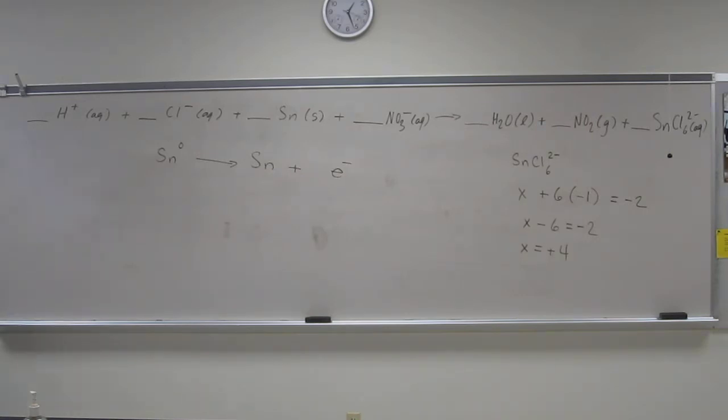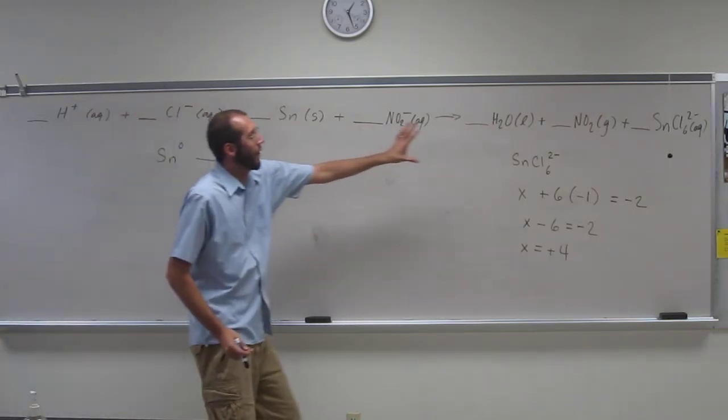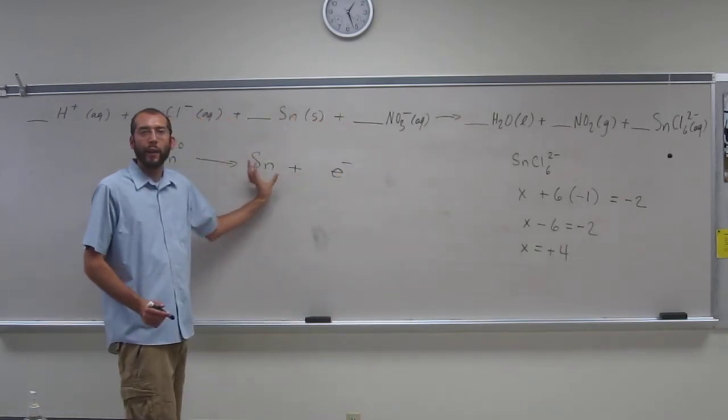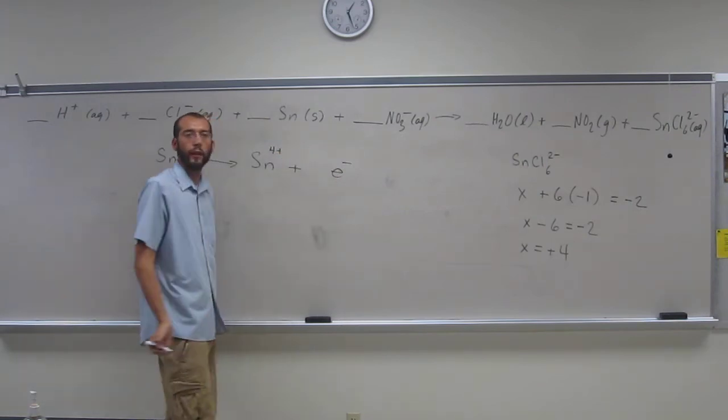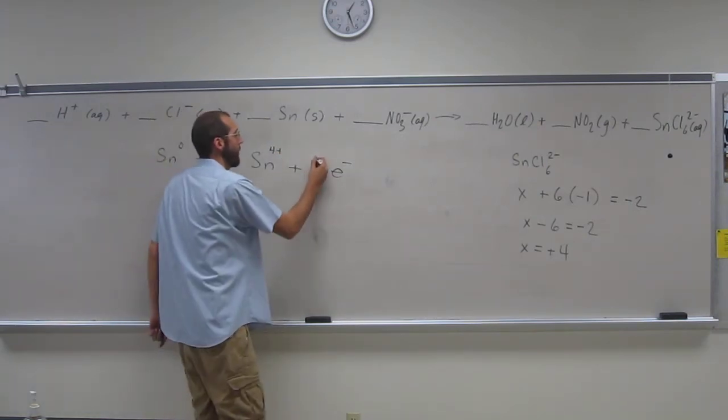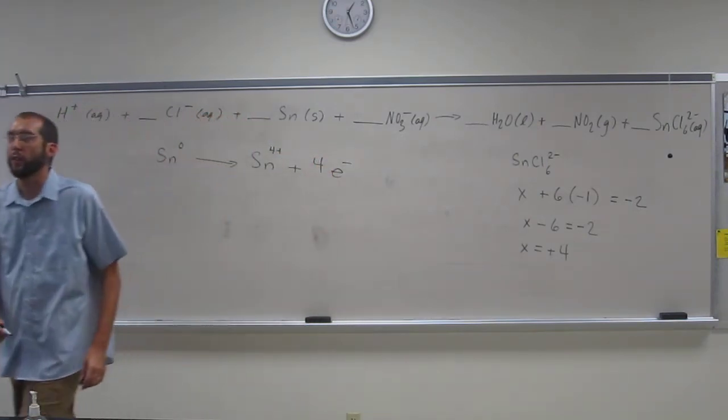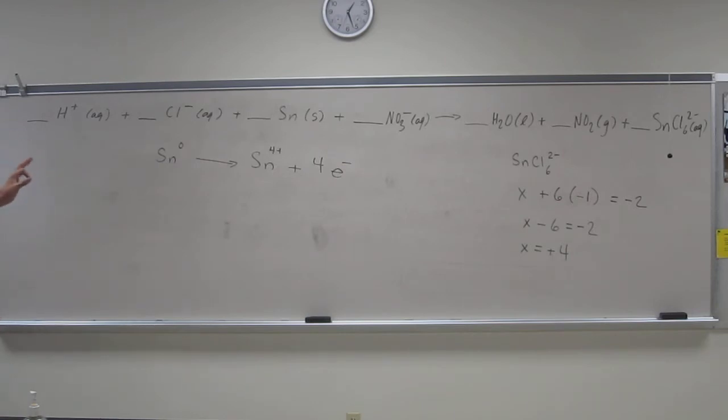So we can put that whole thing in there, but for me it's easier to just look at the tin by itself. So I'm just going to put Sn four plus, like that. So that's one of the half reactions, four electrons.